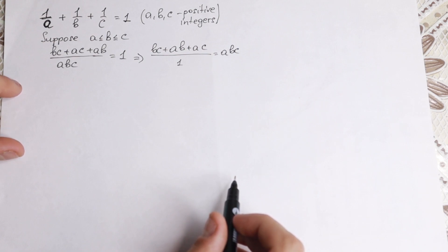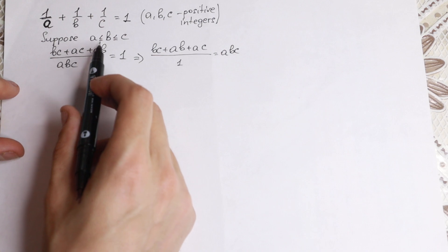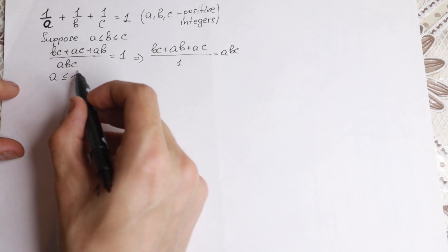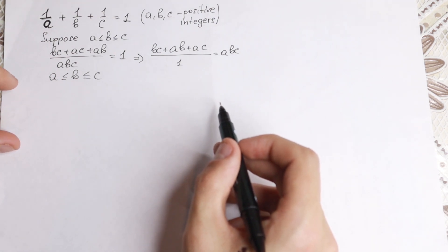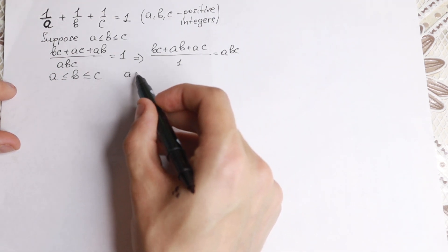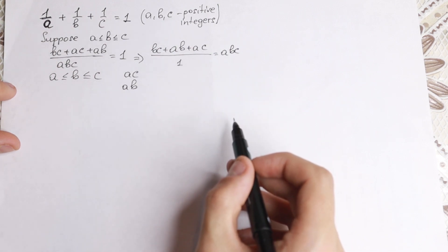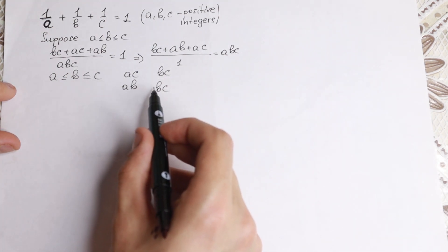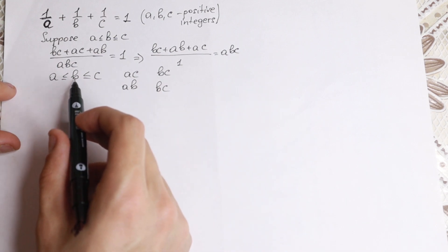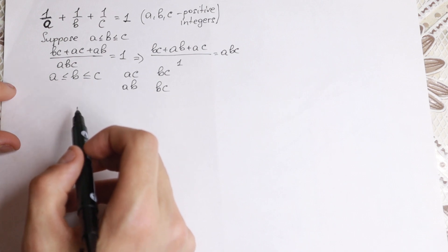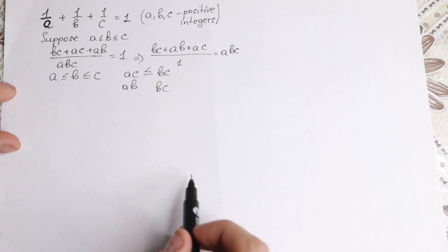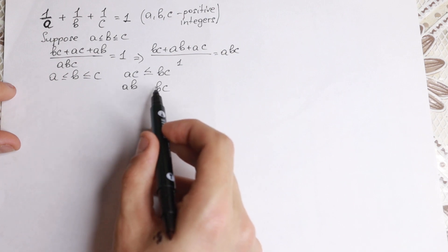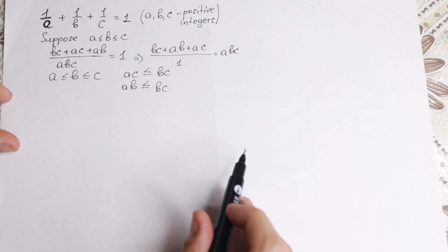And what are we going to do next? I want to mention one really interesting moment using the fact that a ≤ b ≤ c. I want to write this inequality. We have ac and ab, and I want to compare them with bc. Since c ≥ b and c ≥ a, we can replace ab and ac each with bc, giving us bc + bc + bc.